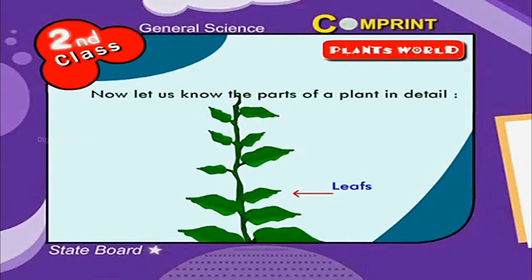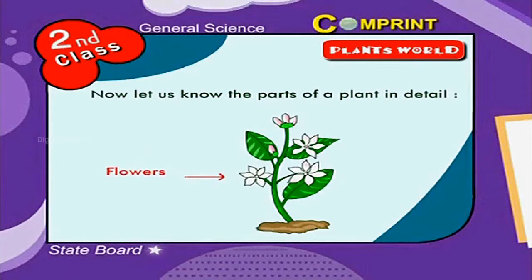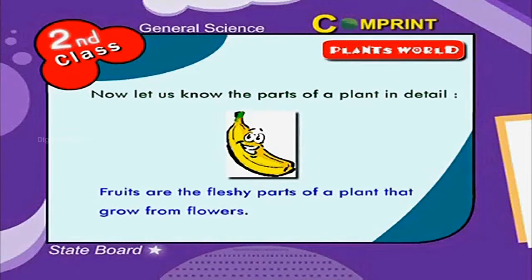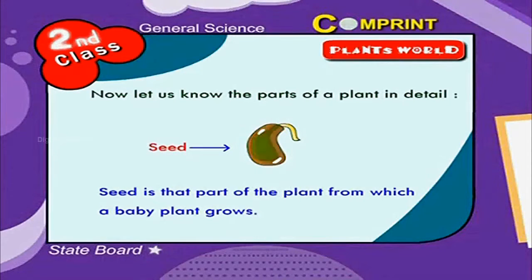Leaves make food for the plants. They are of different shapes and sizes for different plants. These are flowers — they attract insects so that it causes the plant to produce seeds or fruits. Flowers are also in different sizes, shapes and colors. Fruits are the fleshy parts of a plant that grow from flowers. A seed is the part of a plant from which a baby plant grows.